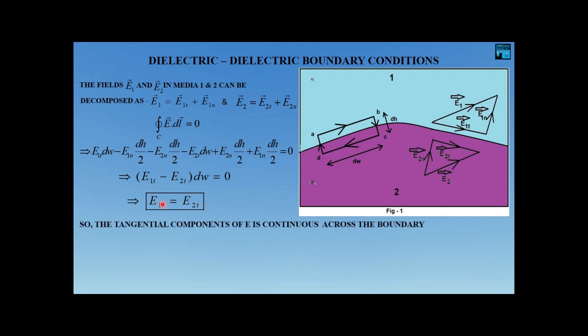Since dw is not equal to zero, we conclude that E1t equals E2t. This means the tangential component of the field vector E is continuous across the boundary. This is our first boundary condition.